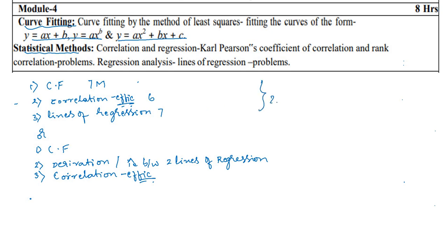Totally it will be of 20 marks. Don't leave any topics here. If you have the confidence, you can leave either the straight line or the second degree parabola, without leaving any topics from the statistical method. This is my sincere request — not to leave any topics from statistical method. Then you can leave one problem from curve fitting and still get a choice to solve all problems for 20 out of 20.